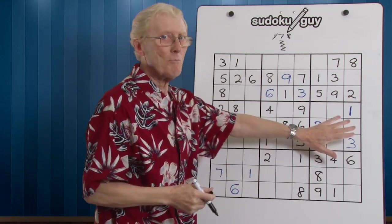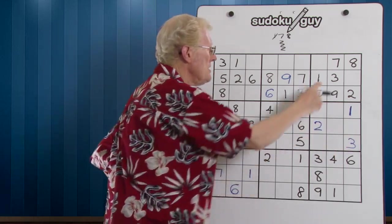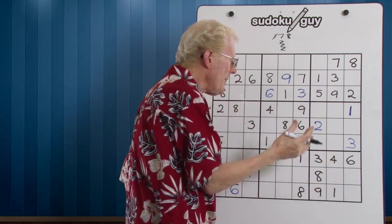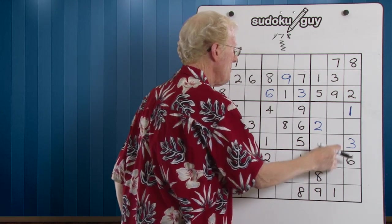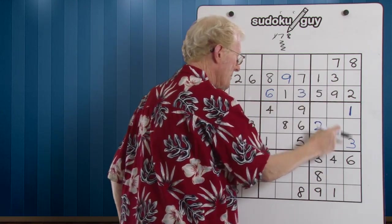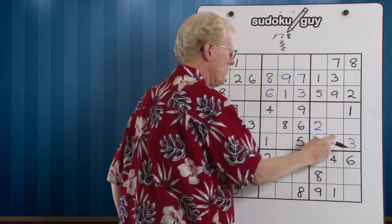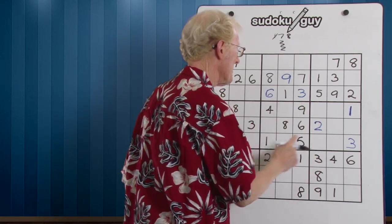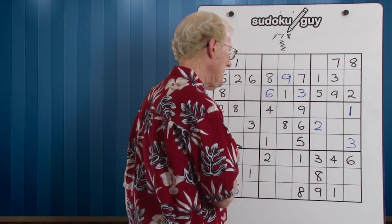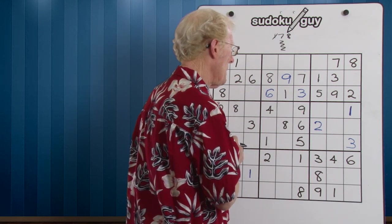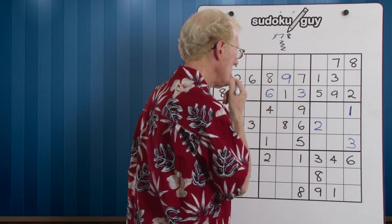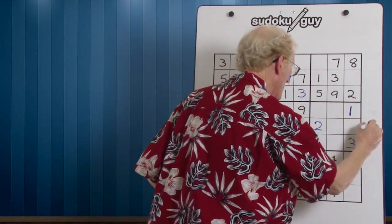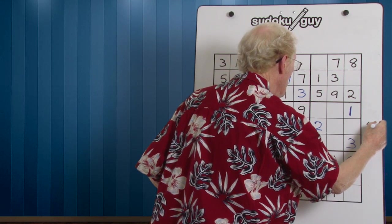Let's look at this block over here. This row here has four numbers in them. Those numbers cannot be in the middle here — we cannot repeat that number in that column. So they have to go over here. There isn't anything repeated, so let's look at the numbers. We're looking at a four, seven, and a nine.